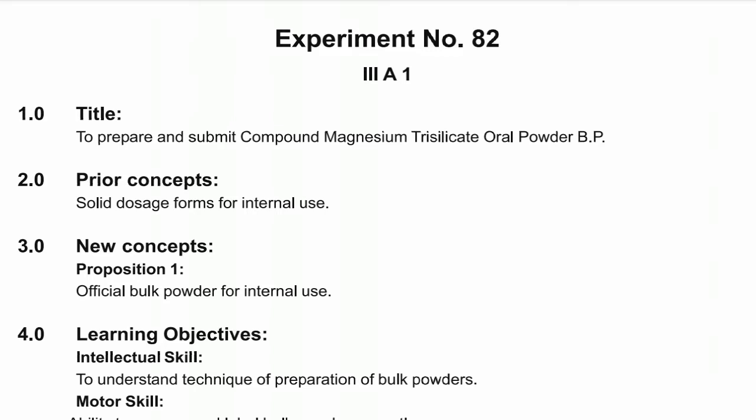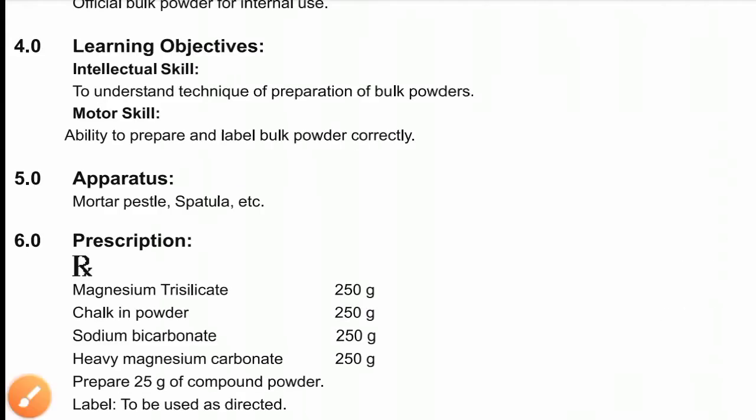Prior concepts include solid dosage forms for internal use, which we have already covered in theory. The new concept is official bulk powder for internal use. Compound magnesium trisilicate is an example of bulk powder — bulk powder means the dosage form which we use in large quantity. The learning objective of this experiment is to understand the technique of preparation of bulk powder, that is, the process to make bulk powder.